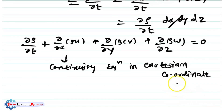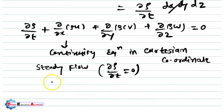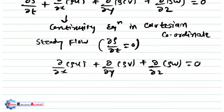We can further modify this equation for steady flow. For steady flow, ∂ρ/∂t = 0. So the modified continuity equation for steady flow in Cartesian coordinates becomes: ∂(ρu)/∂x + ∂(ρv)/∂y + ∂(ρw)/∂z = 0.